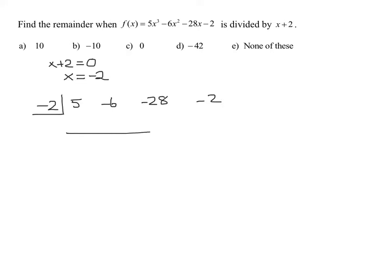So now we're ready to do our synthetic division. Remember, bring down the first number as is. And then we're going to take our negative 2, multiply it by 5, and write the answer up here. So negative 2 times 5 is negative 10. And then we add these two numbers together. What is negative 6 added to negative 10? Negative 16.